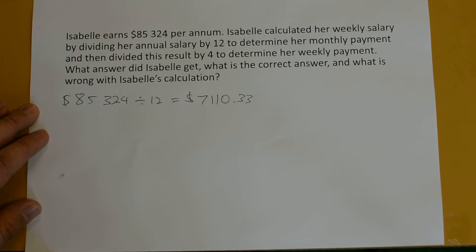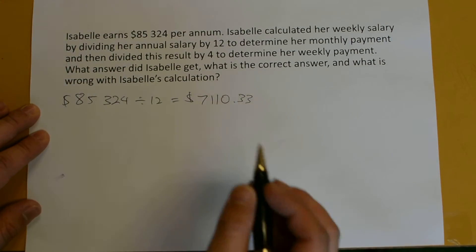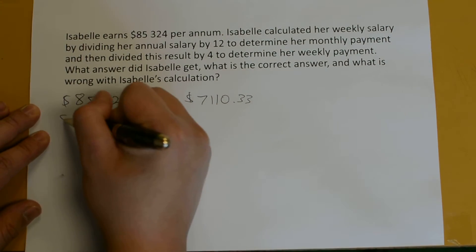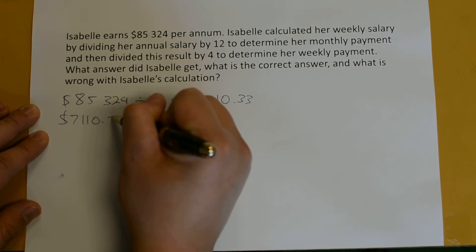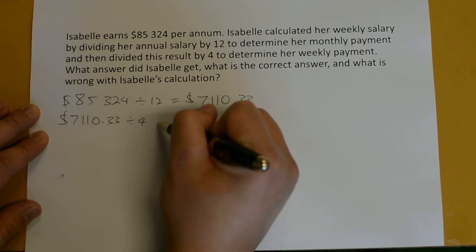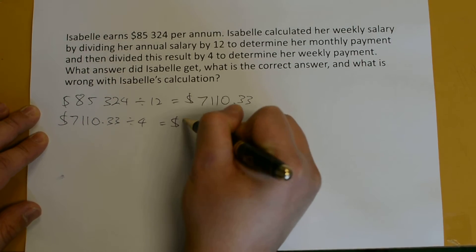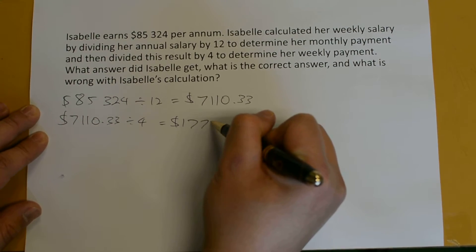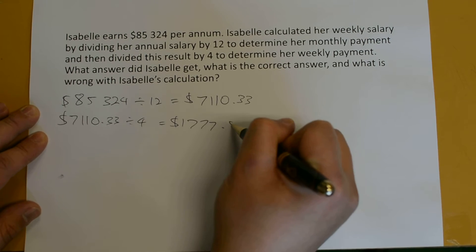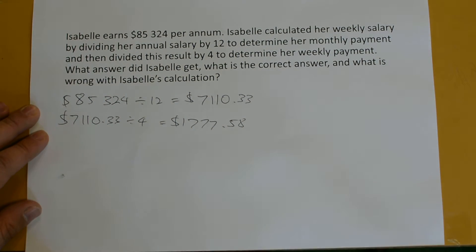She then divides this result by 4 to determine her weekly payment. So $7,110.33 divided by 4 gives approximately $1,777.58, rounded to the nearest cent.